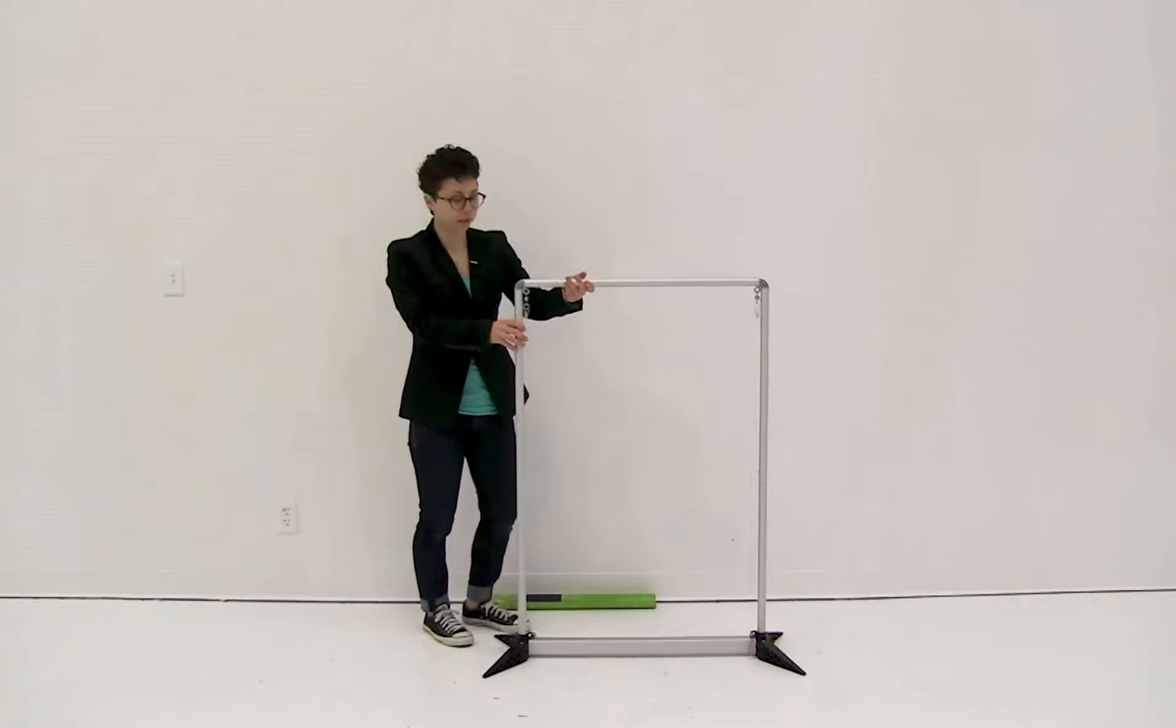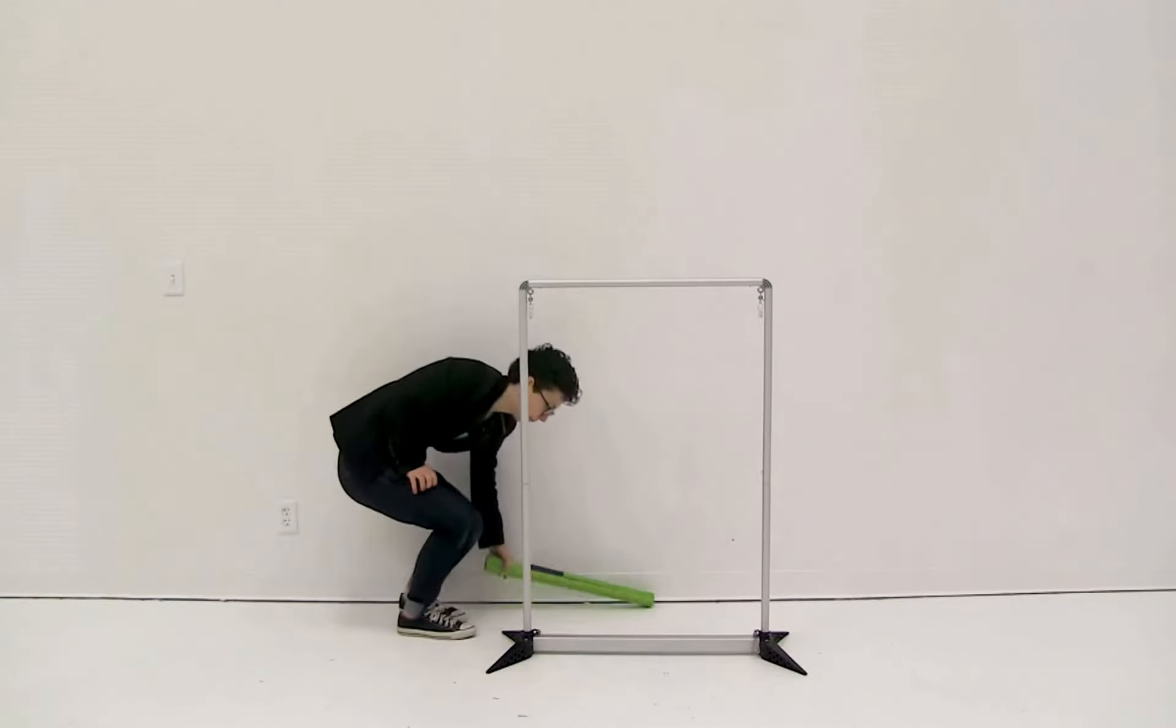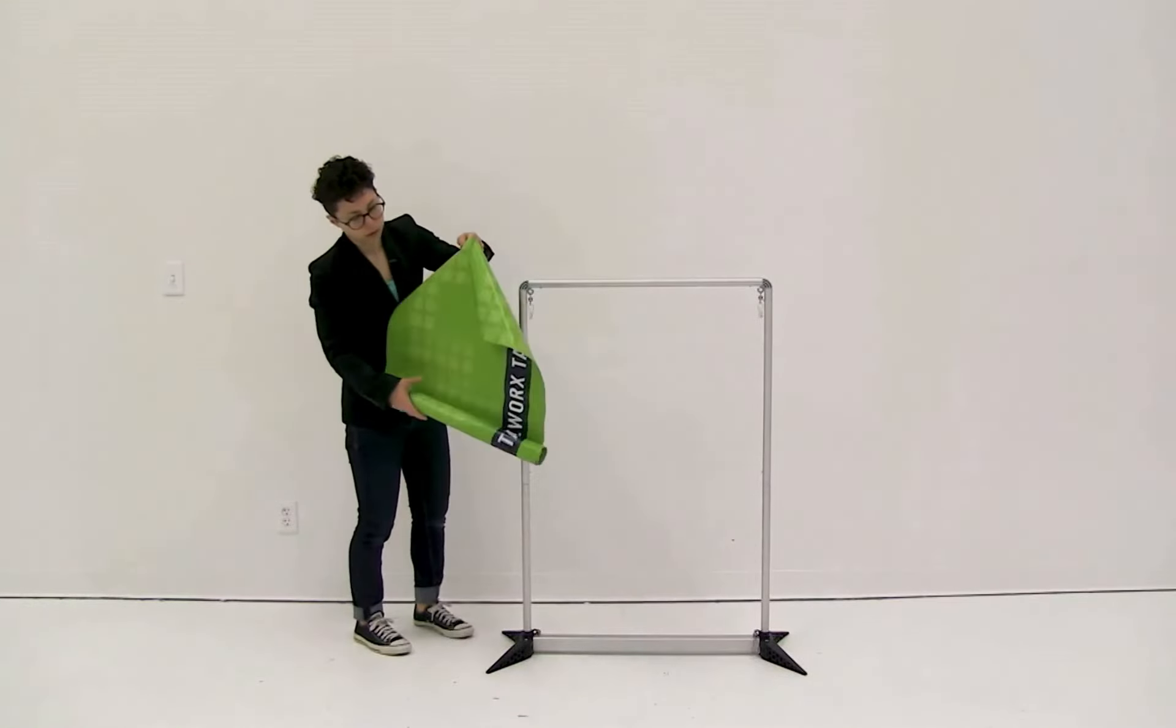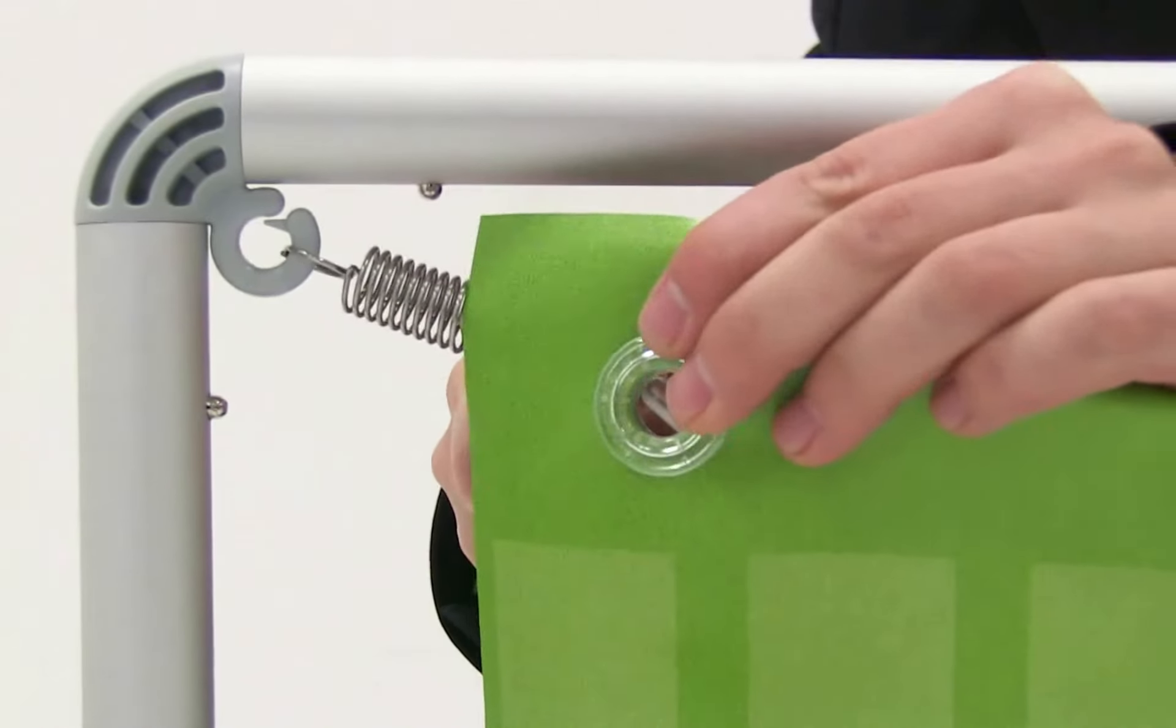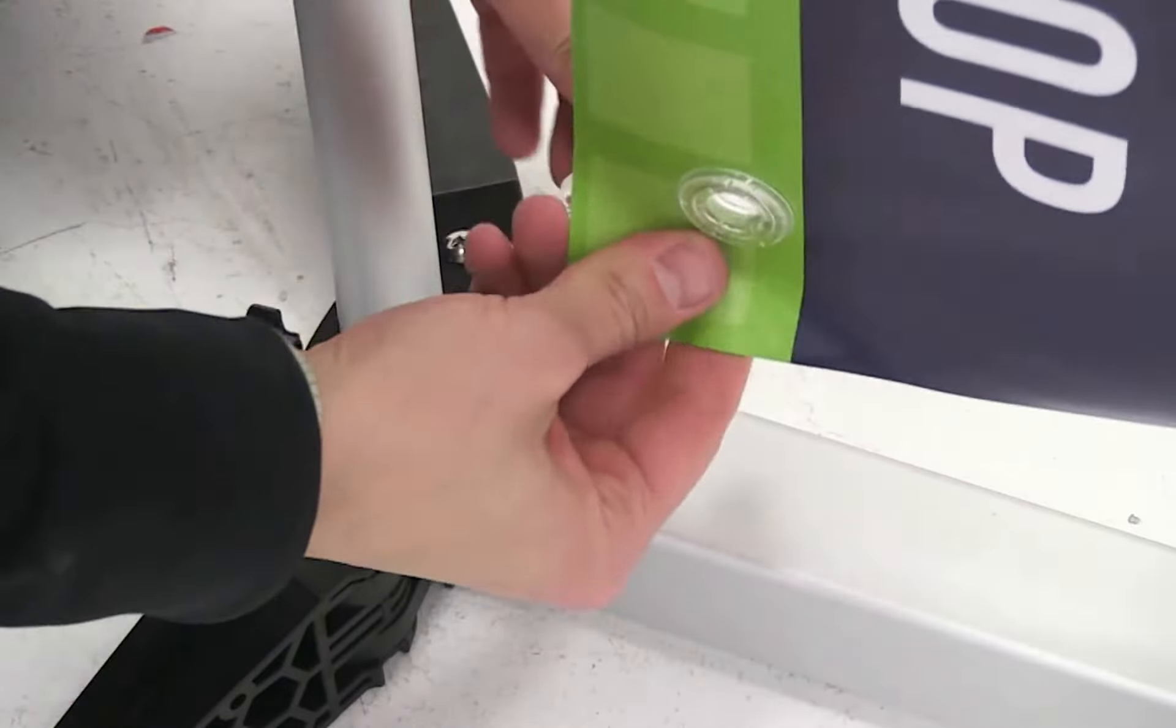Once you have your display built, you're ready to attach the graphic. All you're going to do is slide the grommets onto the hooks. I'm just going to do it for all four sides.